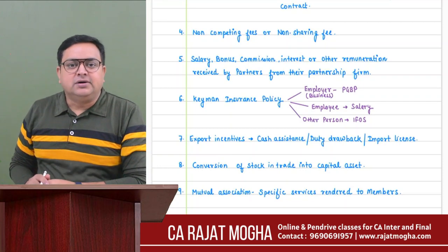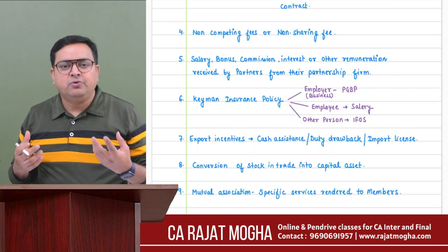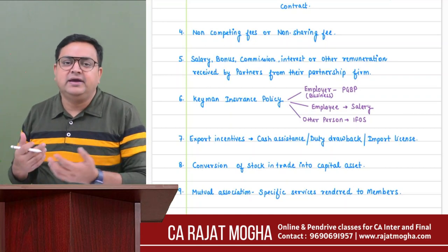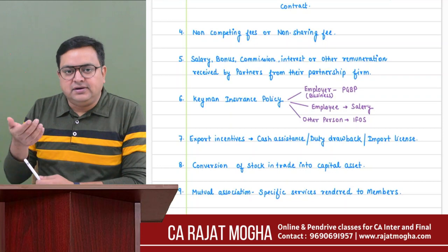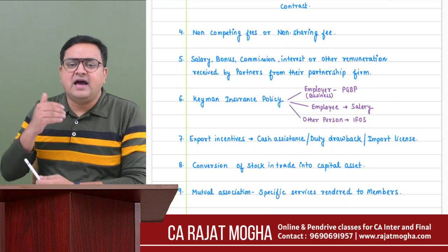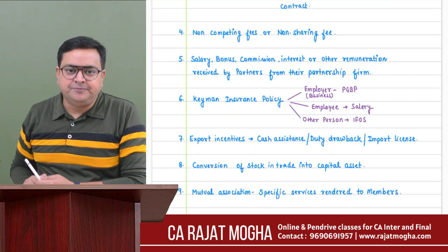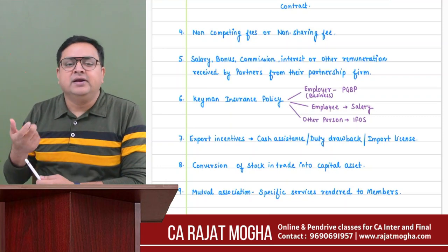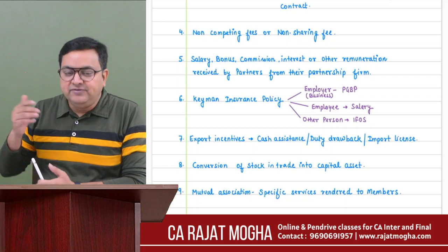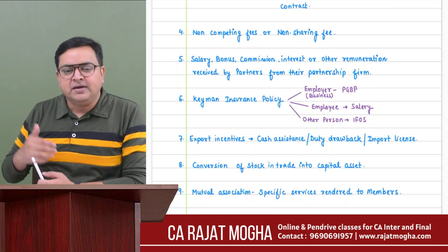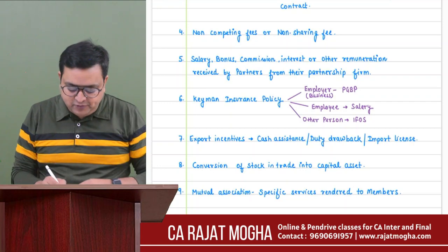Seventh: export incentives. The government promotes exports through various methods - cash assistance, duty drawback, or import entitlement licenses. Cash assistance received from the government for exports is PGBP income. Even if you receive an import entitlement license and sell it, that income is again taxed as PGBP income. So export incentives are PGBP.